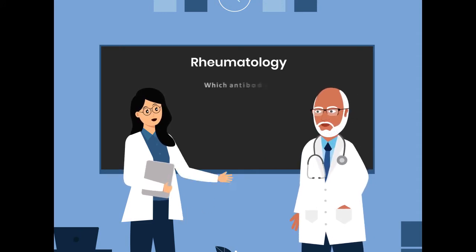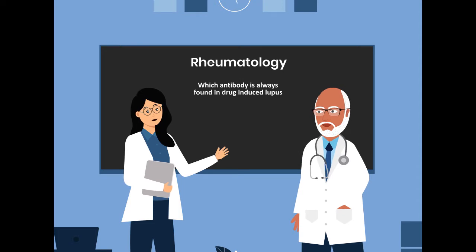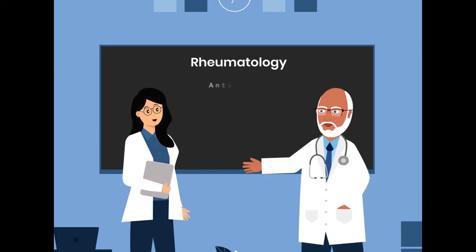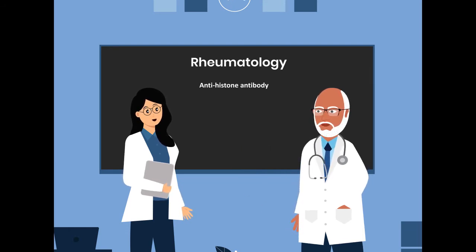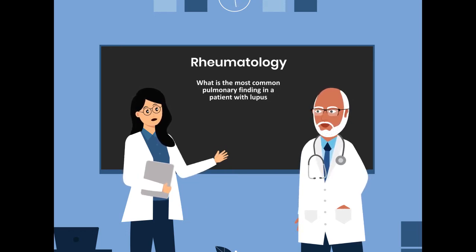Which antibody is always found in drug-induced lupus? Antihistone antibody is always found in drug-induced lupus.